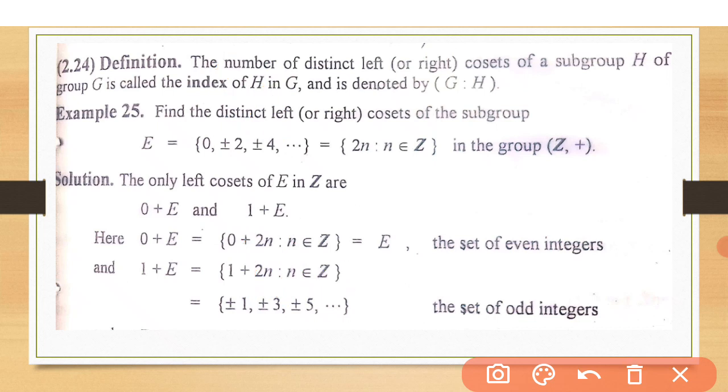You can see that this set and this are unique. This distinct word means that these are distinct. No element is common in this and this. There is no element common.